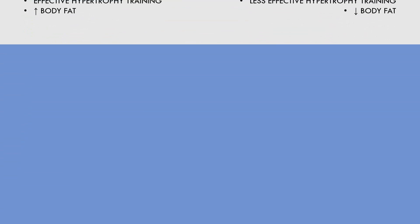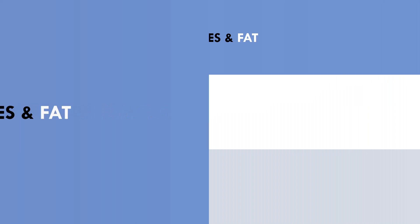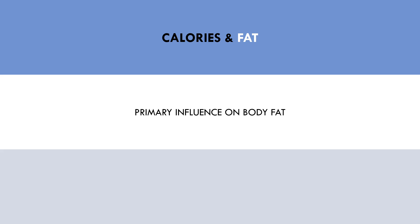Let's now explore how calorie balance influences body fat. Calorie balance is the primary factor influencing body fat. As we mentioned in a previous video in this series, fat is basically just stored energy. We are constantly storing and using fat as fuel for energy production. However, when energy expenditure is greater than intake, energy will be used at a faster rate than it is being stored, resulting in weight loss. Similarly, when energy intake is greater than expenditure, fuel is being stored at a faster rate than it is being used, resulting in weight gain. So a calorie deficit will result in weight loss, while a calorie surplus will result in weight gain.